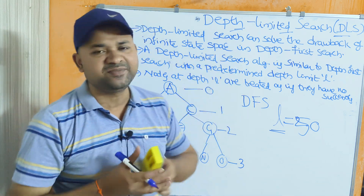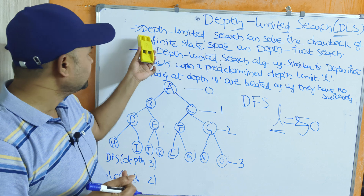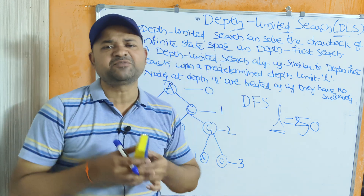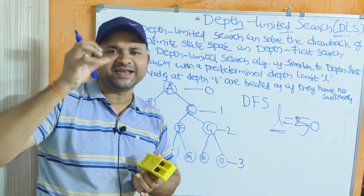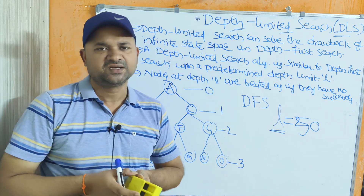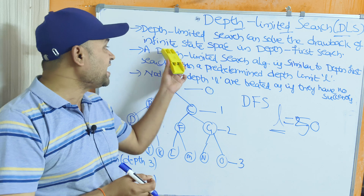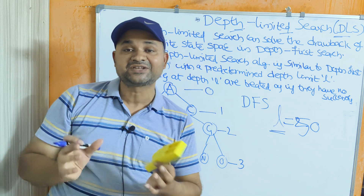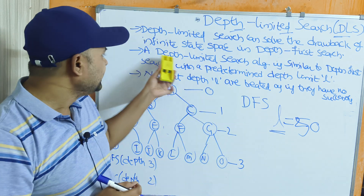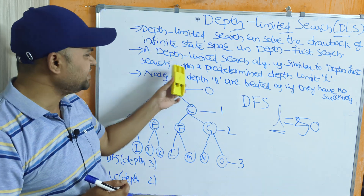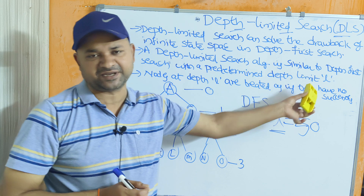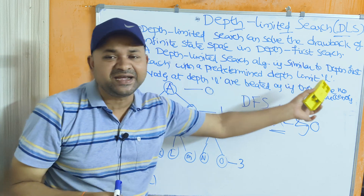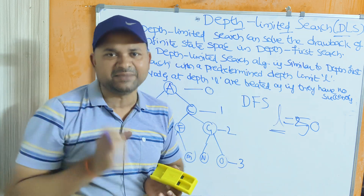Depth Limited Search can solve the drawback of infinite state space in DFS. It is mainly useful to overcome the limitation of DFS when the tree has an infinite number of nodes. DLS is similar to DFS with a predetermined depth limit — instead of going to the deepest level, we search only up to that specified depth limit.